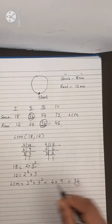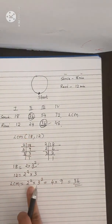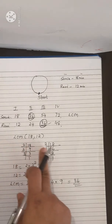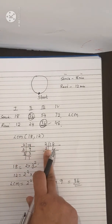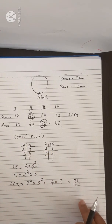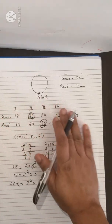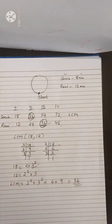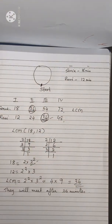So we get our answer as 36 minutes. This is the method to follow — find the LCM of 18 and 12. They will meet again at the starting point after 36 minutes.